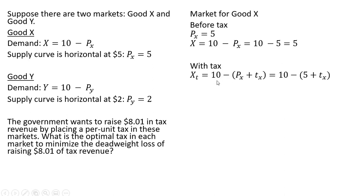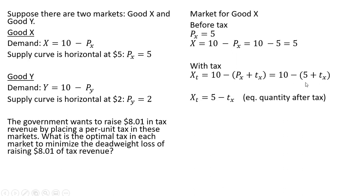With the tax, because we have a perfectly elastic supply curve, consumers will be paying 100% of the tax. So with a tax, the consumers are going to pay the seller P subscript X, and then they're going to pay the government T subscript X. Simplifying, we know P subscript X is 5, so 10 minus 5 minus T subscript X will be the equilibrium quantity after the tax.